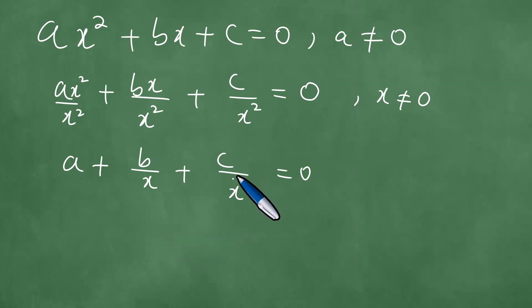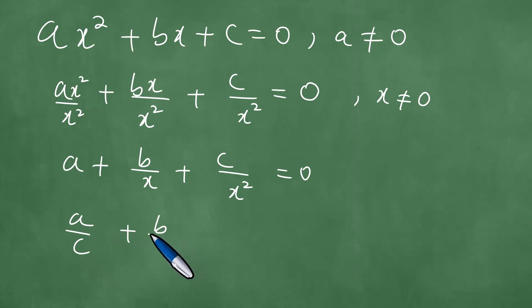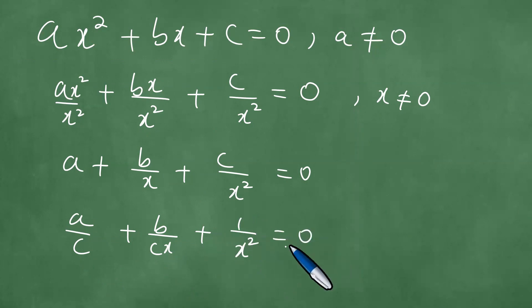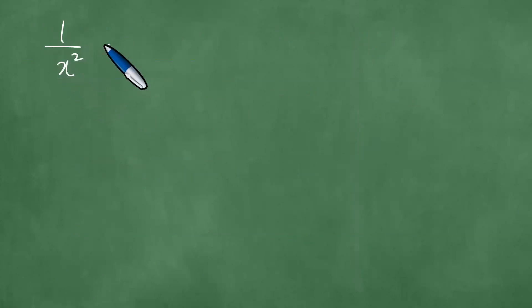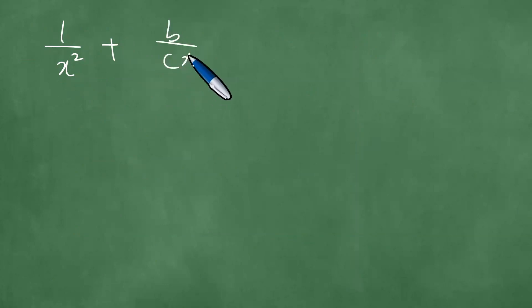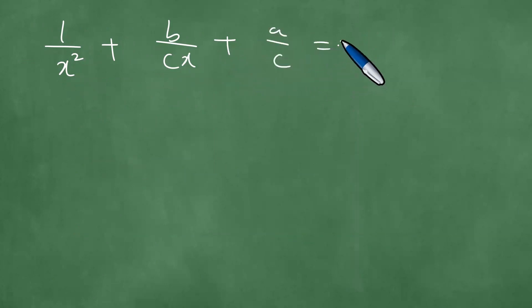Upon further examination, we divide through by c, getting a over c plus b over cx plus 1 over x squared equals 0. This yields 1 over x squared plus b over cx plus a over c equals 0.